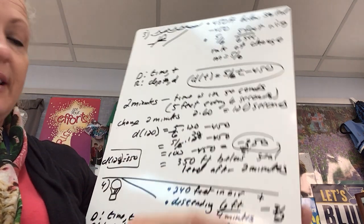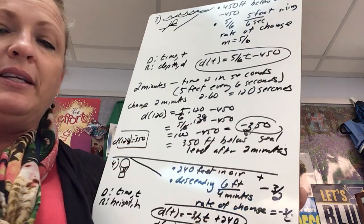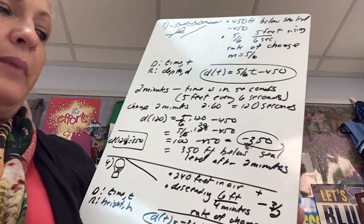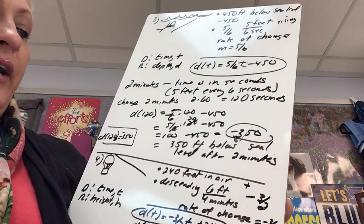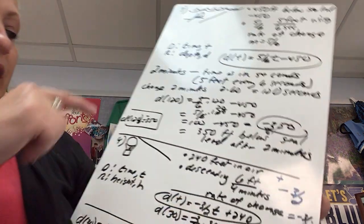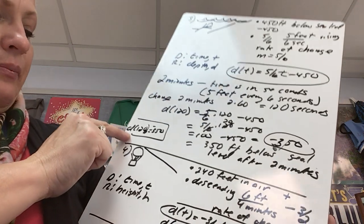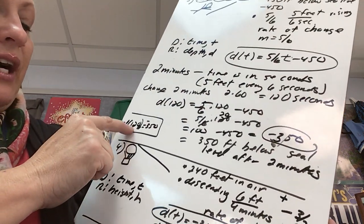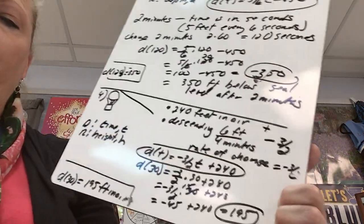100 minus 450 is negative 350. So what does that mean? That means that after two minutes the diver is still 350 feet below sea level. A fancy way to write that would be d of 120 equals negative 350.